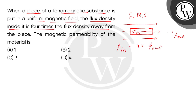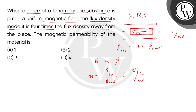We have to find the magnetic permeability of this material. As we know, the magnetic induction B is directly proportional to the flux. So the permeability is defined as B-in divided by B-out, which equals phi-in divided by phi-out, and that gives us 4. So the permeability of this material is 4.